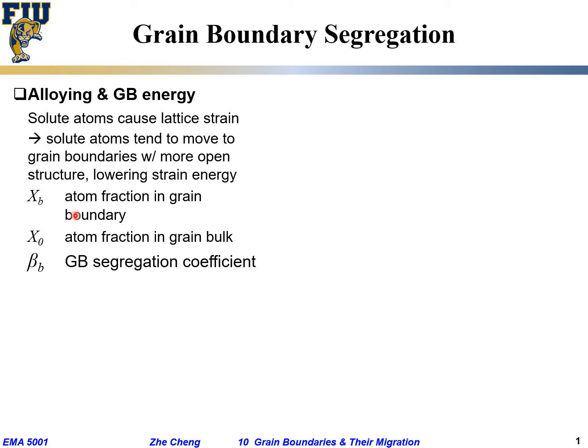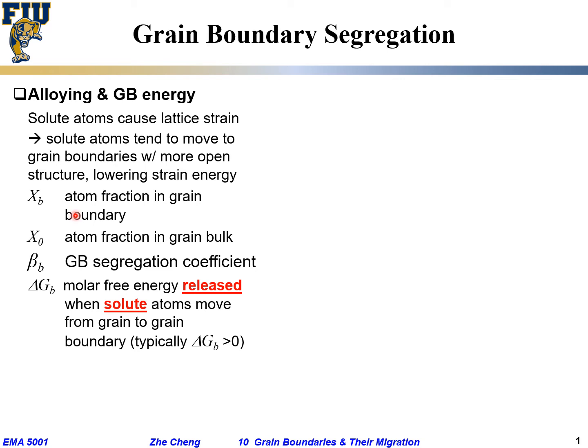Generally, as you can imagine, beta_b is greater than one, because that's where the solute, the impurity atom, tends to stay. And then another term, delta_G_b, is the molar free energy released when the solute atom moves from inside the grain — the densely packed region — to the grain boundary where it's more open. That is the amount of energy given out when one mole (or one atom) moves from within the grain to the grain boundary.